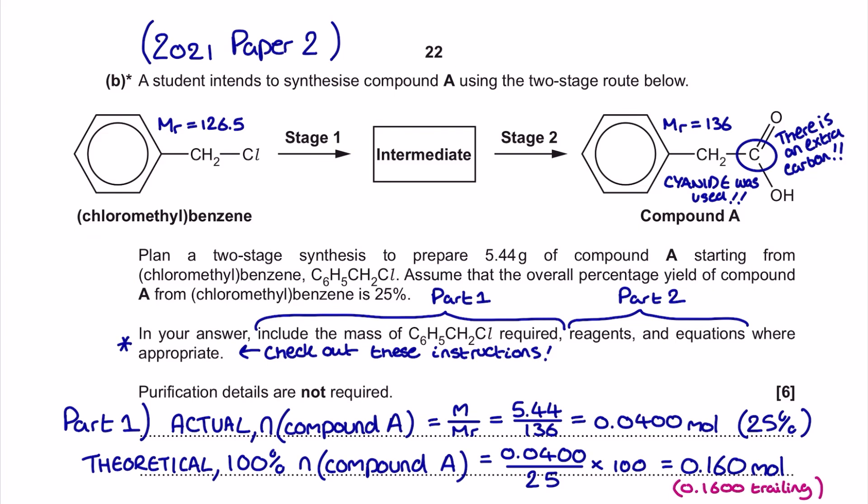First off, a student intends to synthesize compound A using the two-stage route below. We need to plan a two-stage synthesis to prepare 5.44 grams of compound A starting from chloromethyl benzene. We're going to use stage 1 to take us to an intermediate functional group, and we don't know what that is just yet, and then out of that intermediate functional group over to stage 2. Some people take this term 'intermediate' in the wrong way and think it's like the intermediate in a curly arrow mechanism.